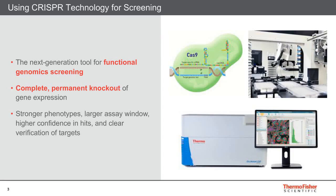Knockdown studies have been used for decades using siRNA as well as shRNA, and both of these approaches still carry high validity and create a great orthogonal or counter screen. The main difference is that with siRNA or shRNA, you are knocking down the message, not the gene. In some cases you can get incomplete delivery or incomplete knockdown, and that data can be challenging to interpret. One of the promises of using Cas9 CRISPR systems is that we expect complete and permanent knockout of a gene, giving us a more penetrant and more specific phenotype.